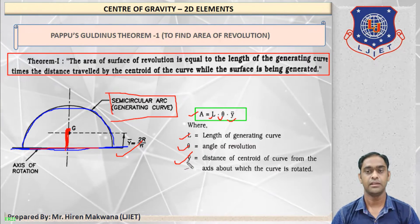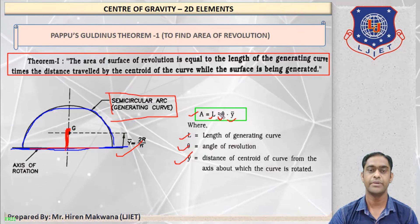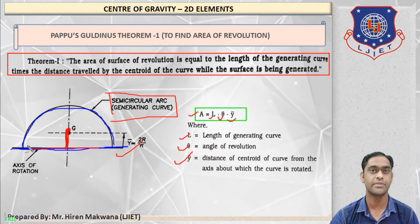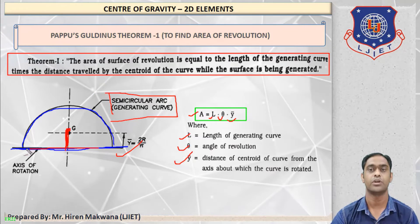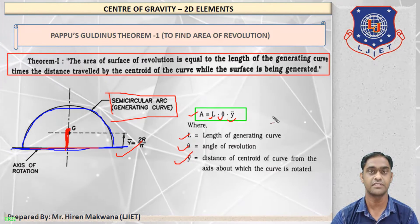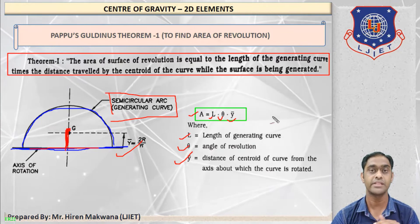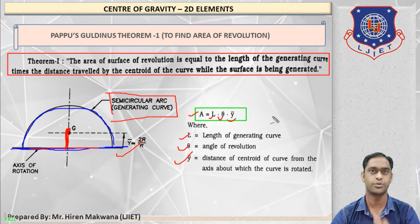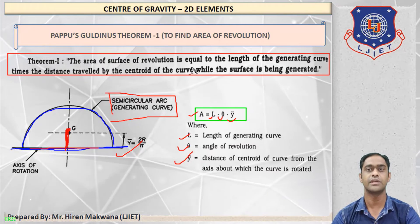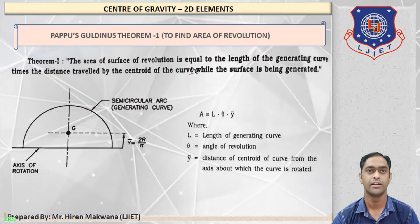Now let us find all the values. L means the length of the semi-circular arc, which is πr. θ is the angle of revolution, which is 2π (i.e., 360 degrees). And ȳ = 2r/π as shown in the figure. Now replace all the values in the formula.